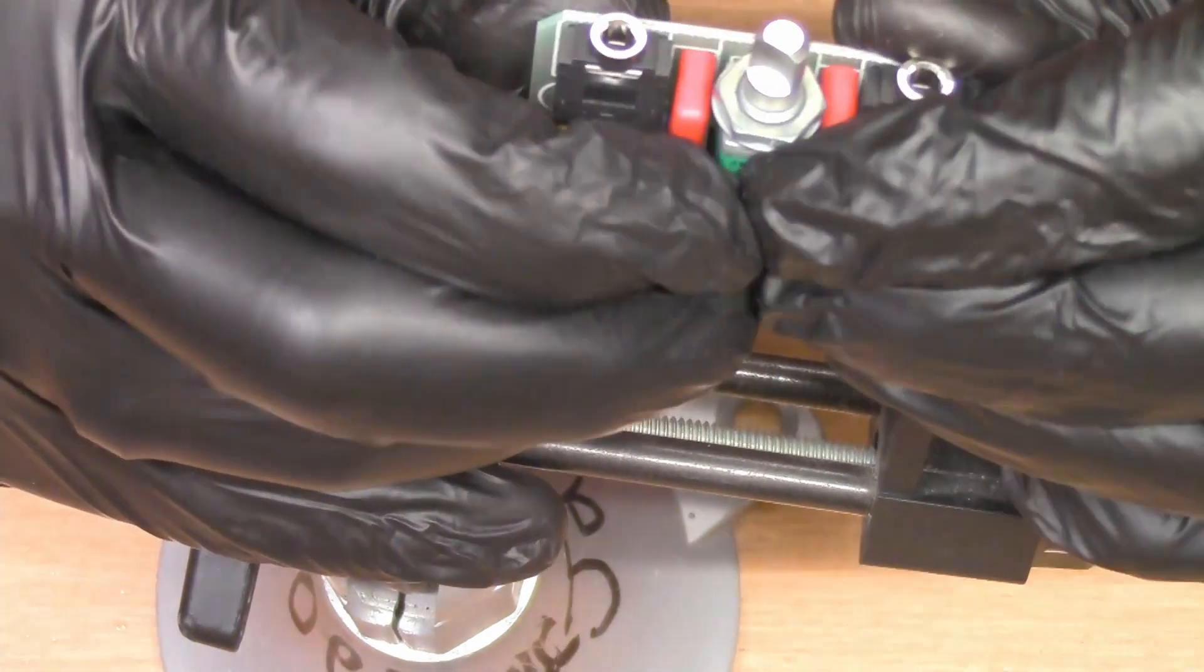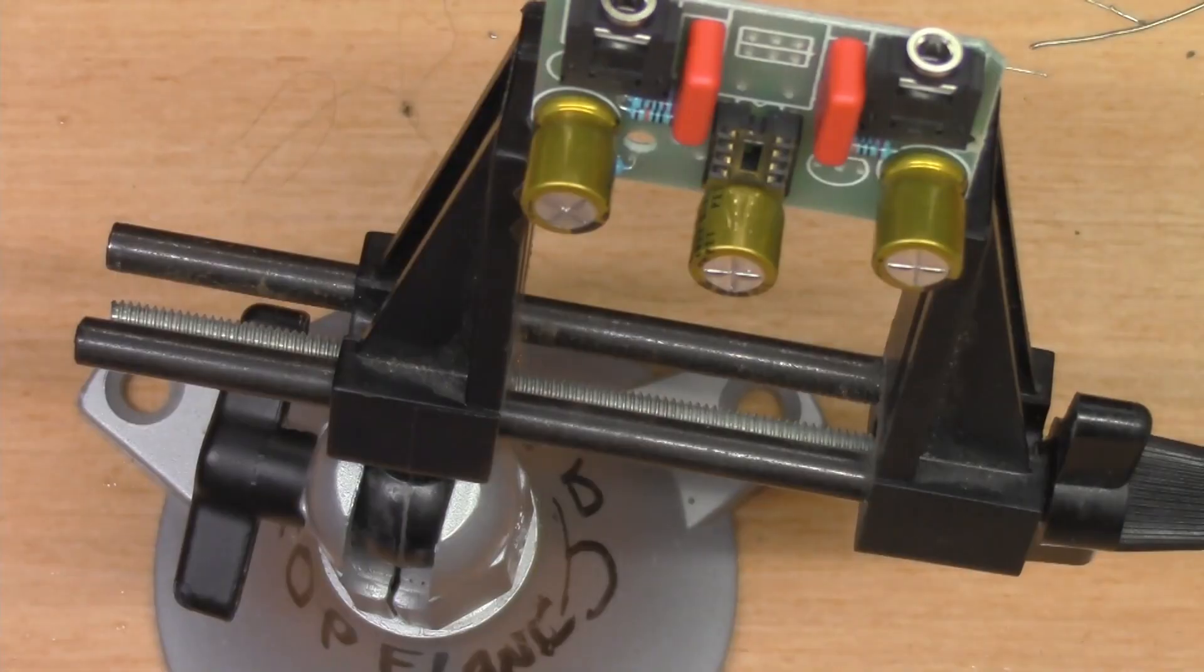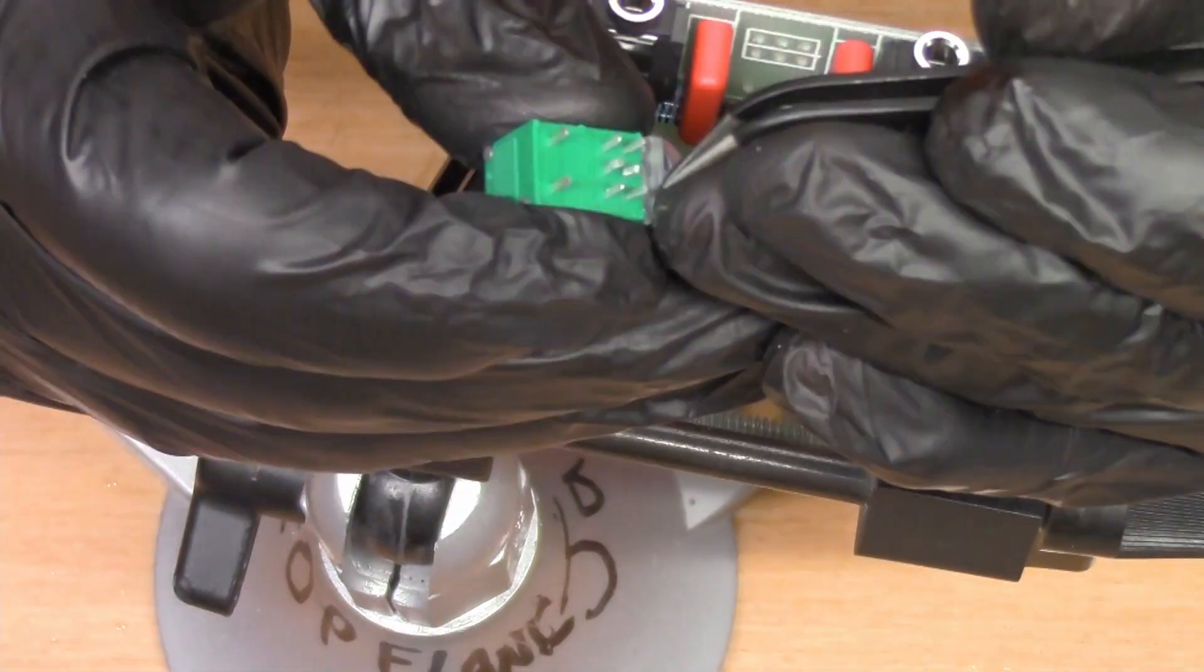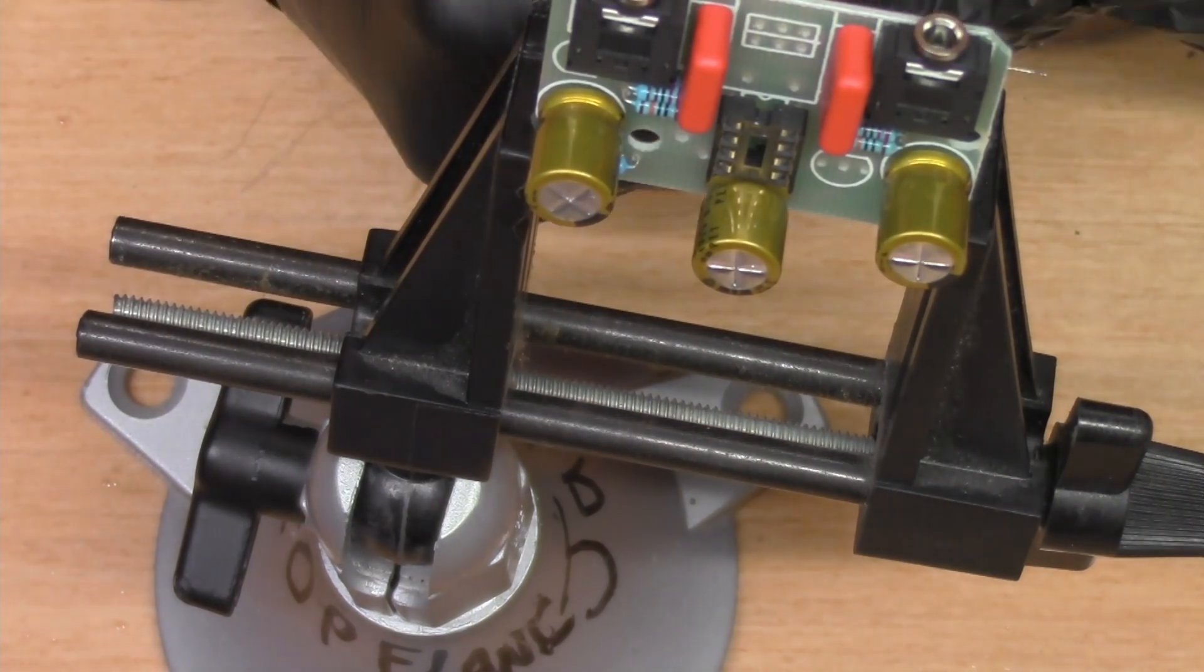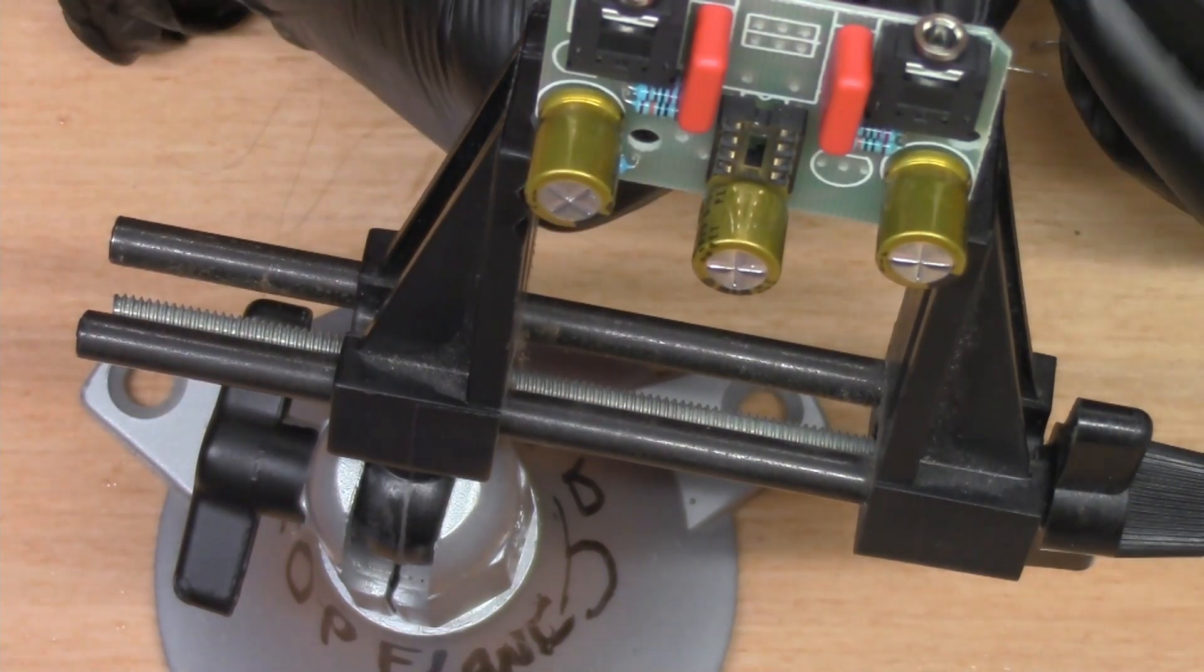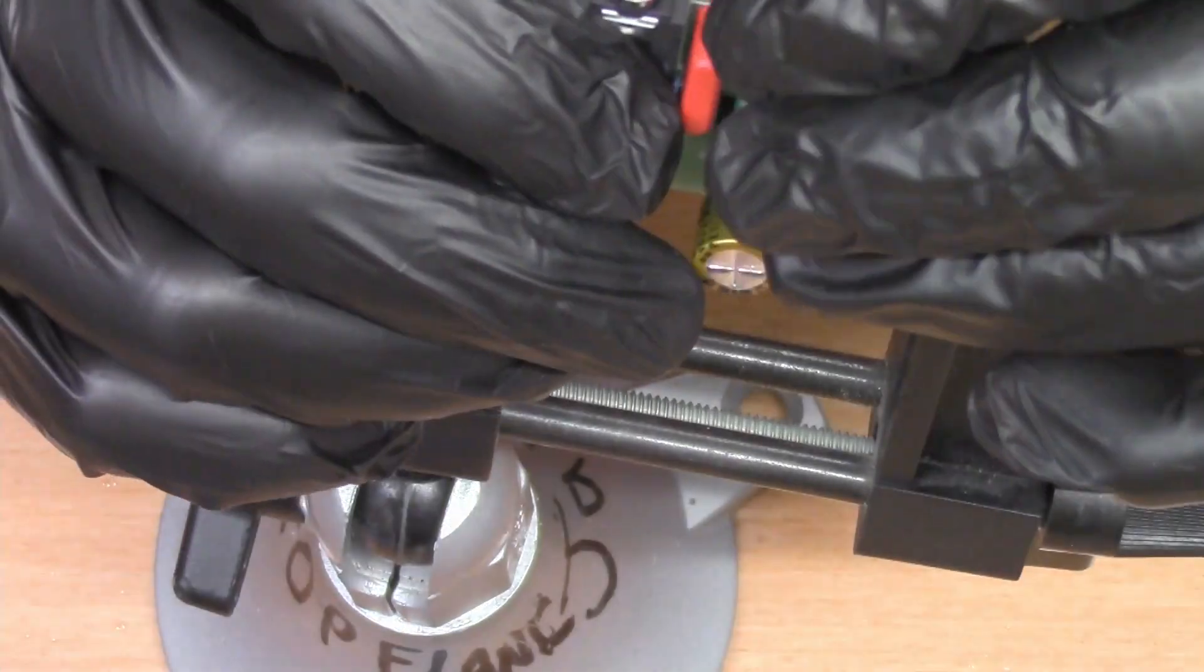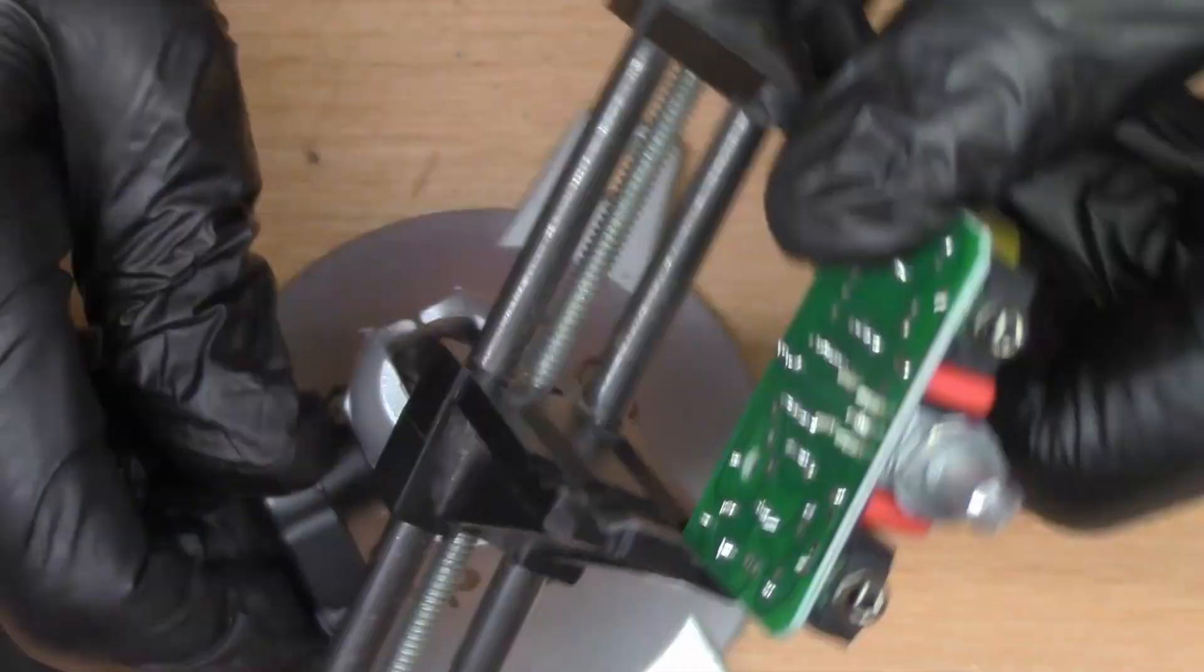So here you'll see me sticking the potentiometer in there, getting ready to solder it. In hindsight, I think I would have stuck the IC into the socket because it was a little bit tight. You'll see here later, I'm trying to get the amplifier IC into that socket after I've got the potentiometer there into place and soldered it in.